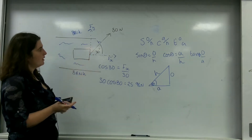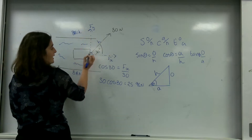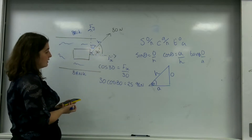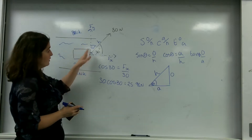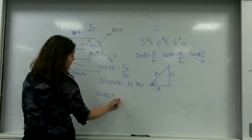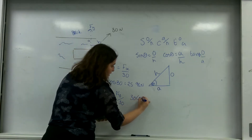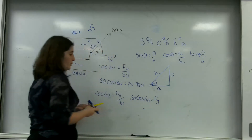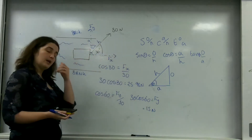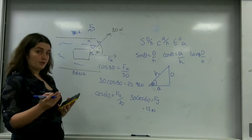Now for the y-component, you can do this a couple of ways. The x and y coordinates are at right angles to each other, so I know that angle there is 60 degrees. If I wanted to, I could use cos again: cos 60 equals Fy over 30. So 30 cos 60 equals Fy, which gives 15 newtons in my y-direction. Or you could do something a little bit different.